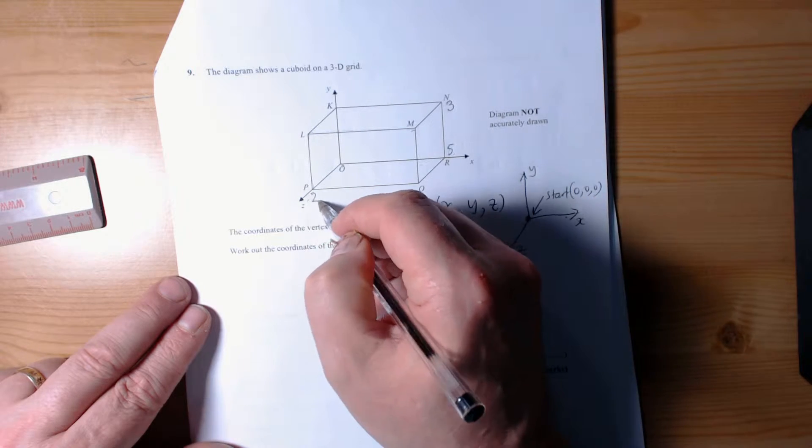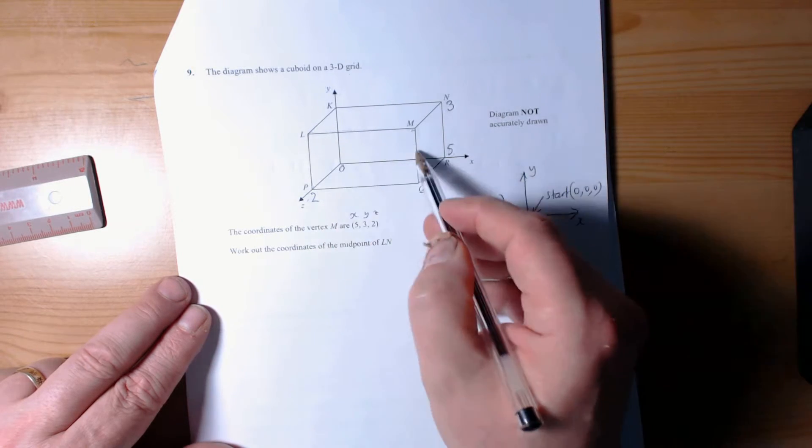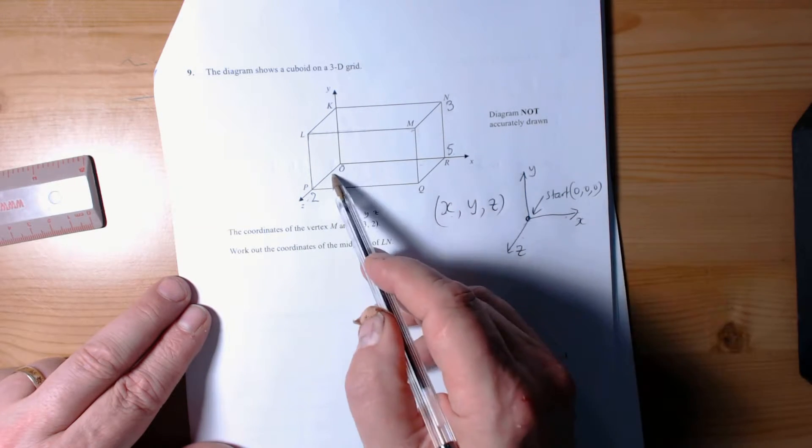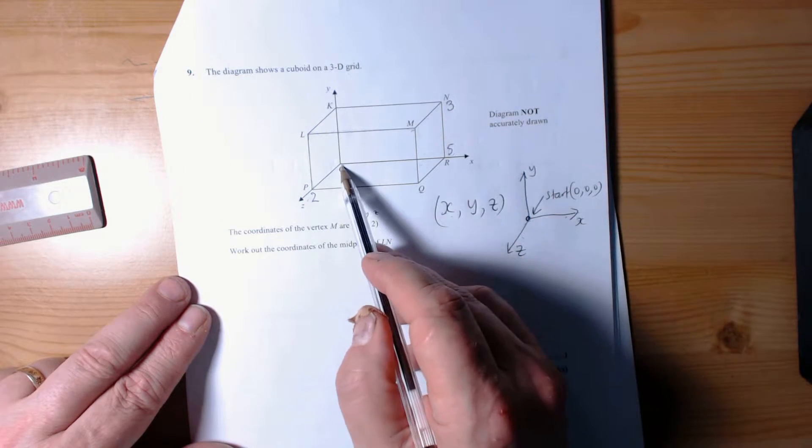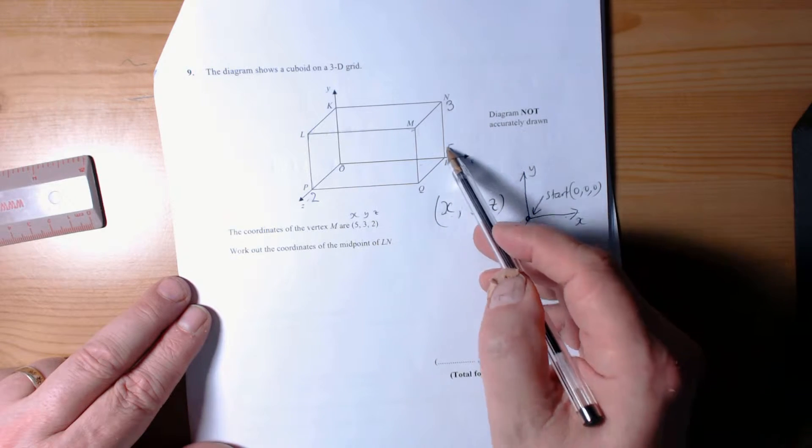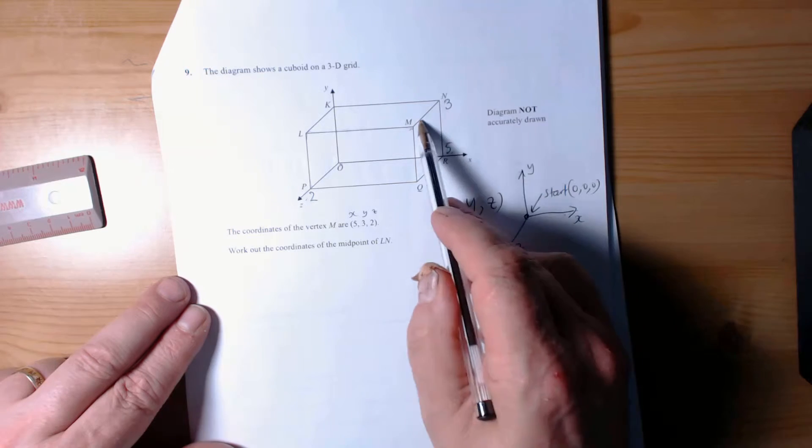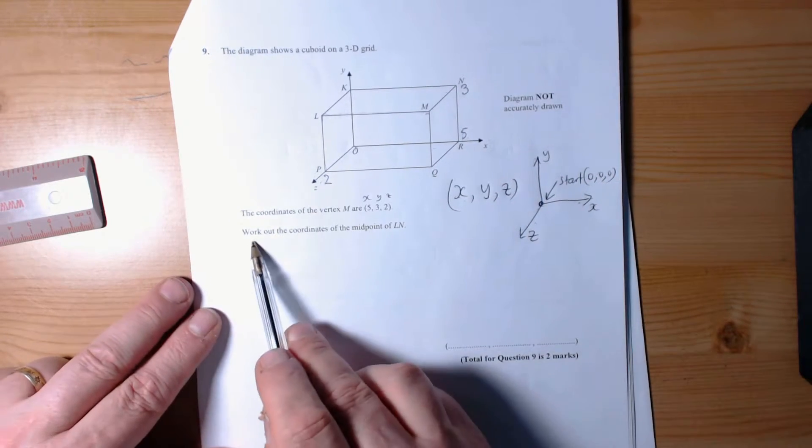Everything on this front of the box has a z-coordinate of 2. The top of the box, everything has a y-coordinate of 3, and the bottom of the box everything has a y-coordinate of 0. Anything on this side has an x-coordinate of 5. That's the way to think about these questions.